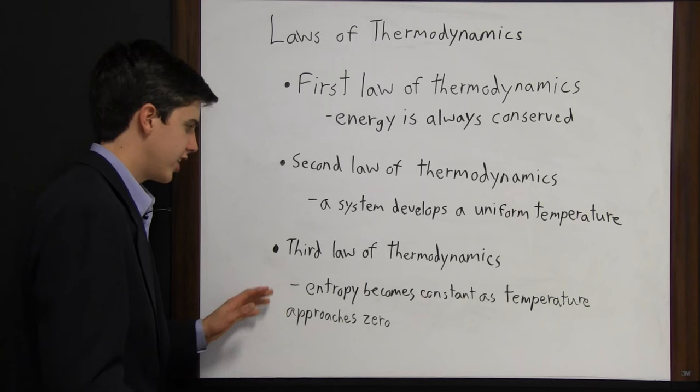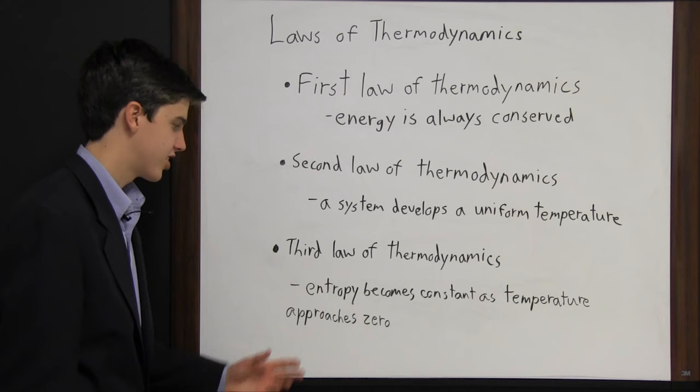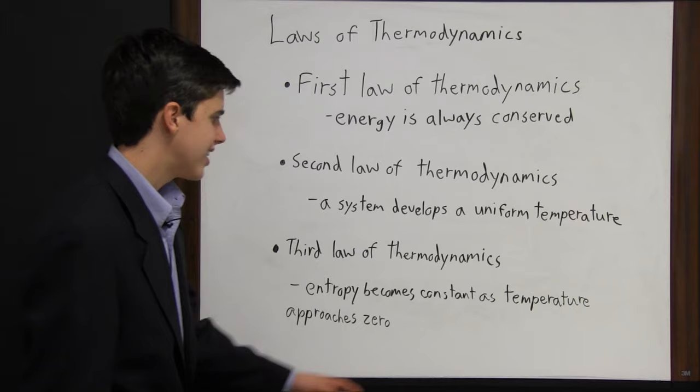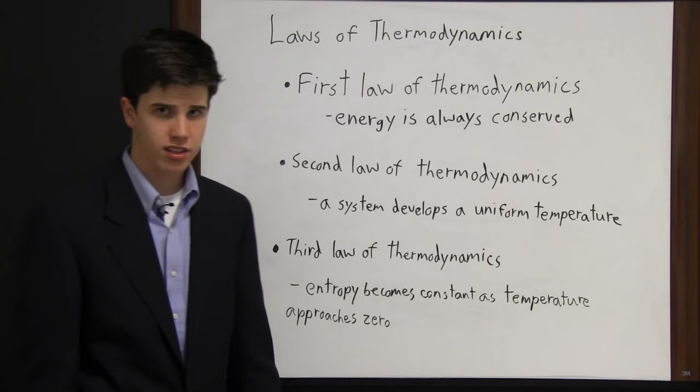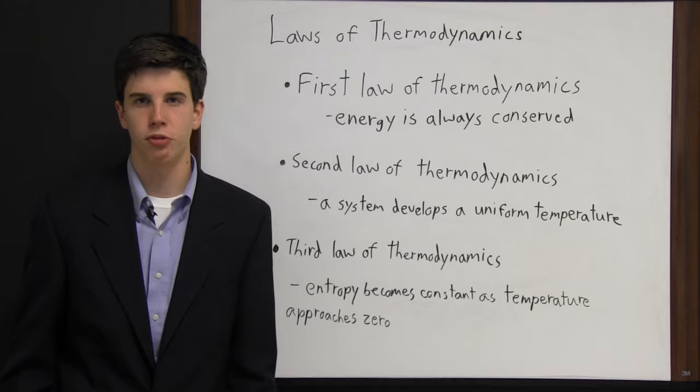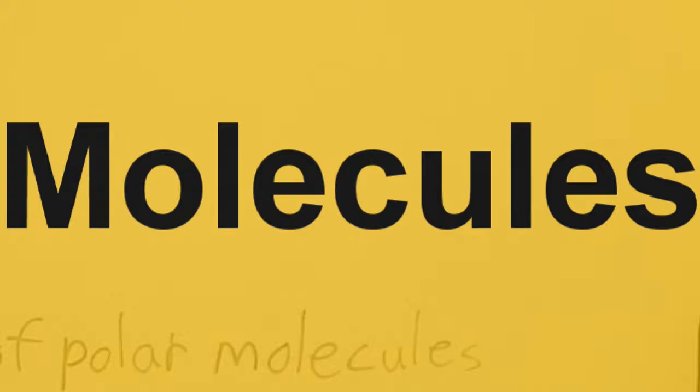The third law of thermodynamics states that entropy becomes constant as temperature approaches zero. Entropy is the flow of heat. As temperature approaches zero, the flow of heat becomes constant.